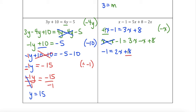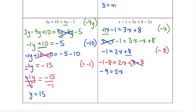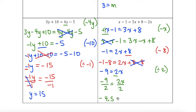Now I'm going to eliminate the constant on the same side as my variable. The opposite of adding 8 is subtracting 8 from both sides. Negative 1 subtract 8 equals 2x plus 8 subtract 8. Negative 1 subtract 8 is negative 9, and 8 take away 8 is 0, so I'm left with negative 9 equals 2x. Last step: get rid of the coefficient in front of the variable. The opposite of multiplying is dividing, so I divide both sides by 2. Negative 9 divided by 2 is negative 4.5, and 2 divided by 2 is 1. So x equals negative 4.5 — don't be afraid of those negative numbers.